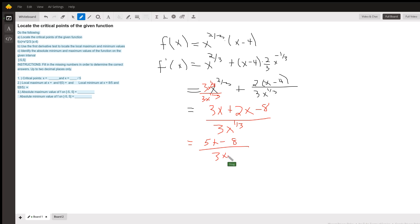And so the critical numbers are going to occur where the derivative is undefined, which means when x is zero, or when 5x minus 8 equals zero, when the numerator is zero. So the critical numbers are at zero and 1.6 or eight-fifths.